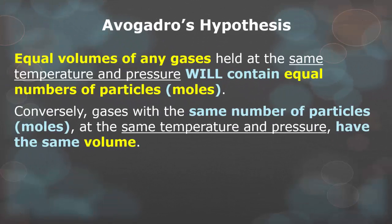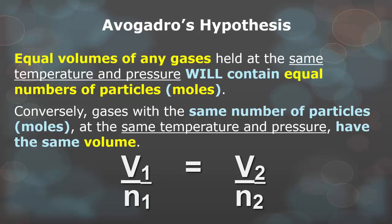So if we recall Avogadro's hypothesis, equal volumes of any gas held at the same temperature and pressure will contain equal number of particles, or moles. Conversely, gases with the same number of particles, or moles, at the same temperature and pressure, have the same volume. So if you have one liter of oxygen and one liter of carbon dioxide, they have the same amount of particles if they're held at the same temperature and pressure.